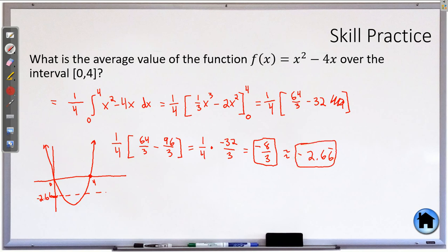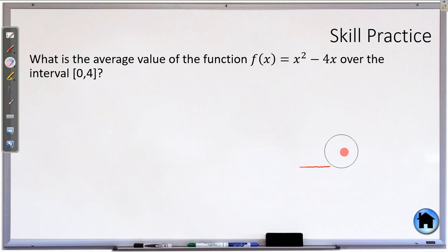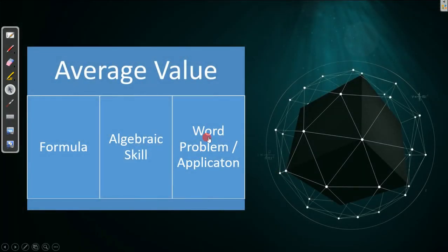That is the average value of that parabola from 0 to 4. So that is the basic skill that you need to be able to do. Let's do a quick interpretation question with some motion. Everything we do in this class can be applied to motion. So let's do our word problem.